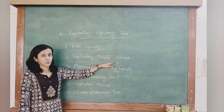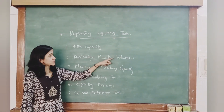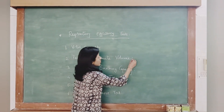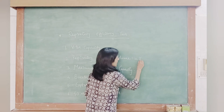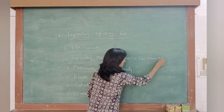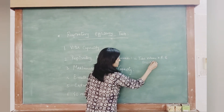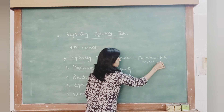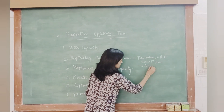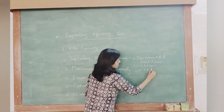Respiratory minute volume, also known as minute ventilation or pulmonary ventilation, is the volume of air respired per minute. It is calculated by the formula: tidal volume multiplied by respiratory rate. For example, if tidal volume is 500 ml and respiratory rate is 12 per minute, the respiratory minute volume would be 6 litres per minute. The normal range is 6 to 7.5 litres per minute.